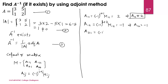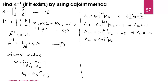Cofactor A21 is minus 1 raised to 2 plus 1, into M21. M21 is the minor of the second-row first element, which is 1; deleting its row and column leaves 5. Minus 1 raised to 3 is minus, so A21 is equal to minus 5. Now cofactor A22: minus 1 raised to 2 plus 2 into M22 equals minus 1 raised to 4, which is plus, and M22, the minor of 2, is 3. So A22 equals 3. Therefore the cofactor matrix is [[2, -1], [-5, 3]].